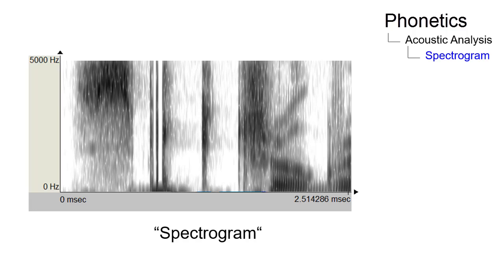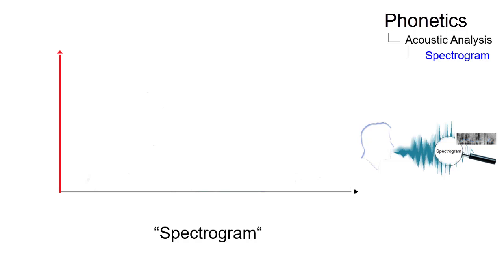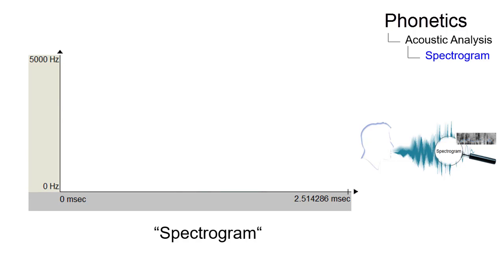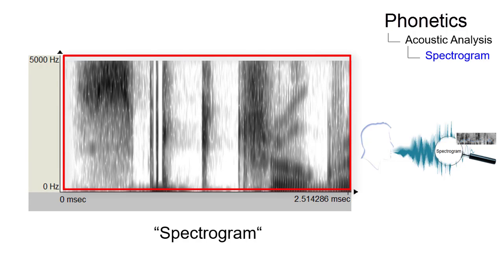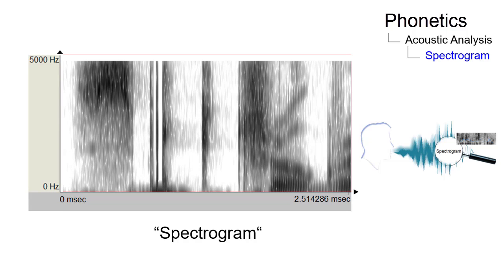Spectrograms are visual representations of spoken words. They are used in the field of speech processing to display the spectrum of frequencies in a sound as they vary with time. The vertical axis of a spectrogram represents the frequency. The horizontal axis represents time in milliseconds. A third dimension indicates the amplitude or the loudness of a particular frequency. Amplitude is displayed in shades of grey from light to dark.